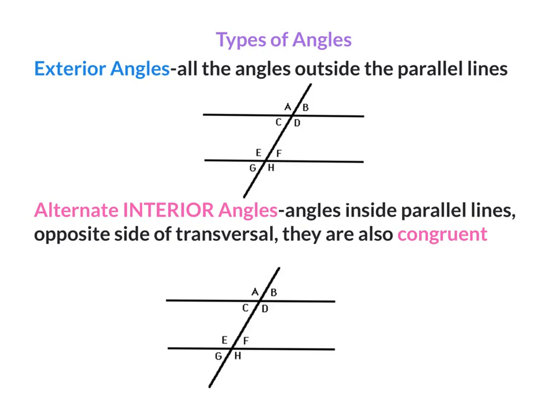Exterior Angles. These are all the angles outside the parallel lines. When you think of the word exterior, think of the word outside. These angles are outside the parallel lines — that would be A, B, G, and H. These angles are not congruent to one another.